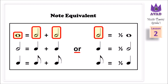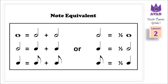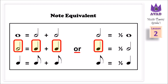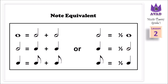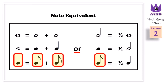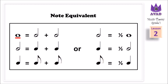Or, a minim equals half a semibreve. A minim equals 1 crotchet plus 1 crotchet. Or, a crotchet equals half a minim. A crotchet equals 1 quaver plus 1 quaver. Or, a quaver equals half a crotchet.